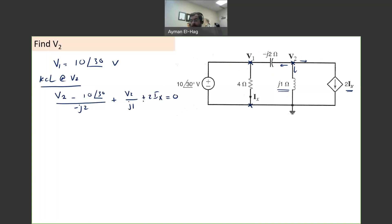So here we have one equation with two unknowns, V2 and Ix. But Ix is a dependent variable, so we need to find what is Ix. Basically, Ix is nothing but V1 divided by 4. And V1 is 10∠30° divided by 4. So it's equal to 2.5∠30°. It has a value because V1 is known to me. So Ix itself has a value in amps. Excellent.